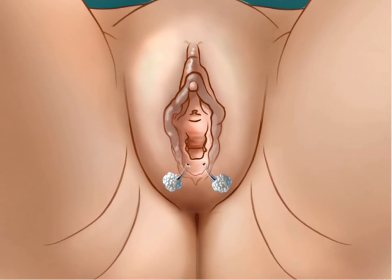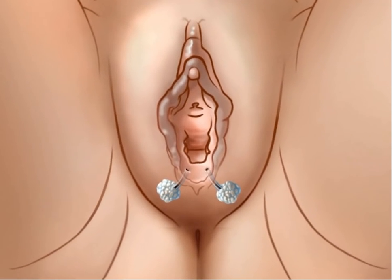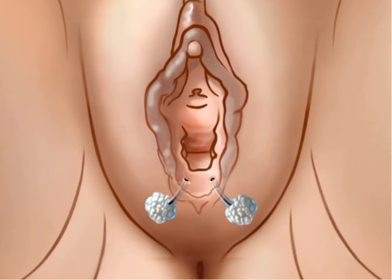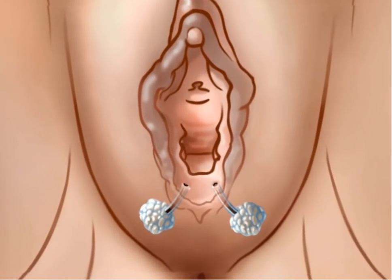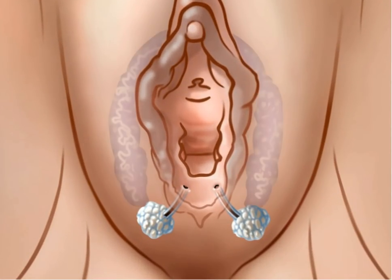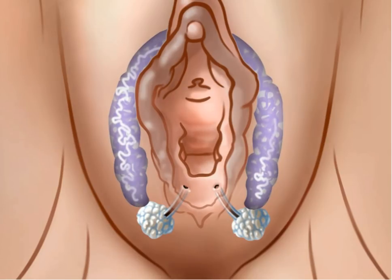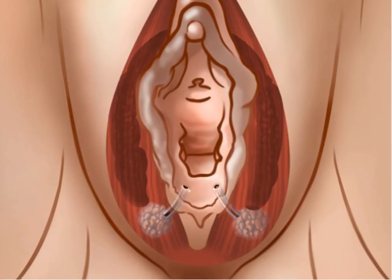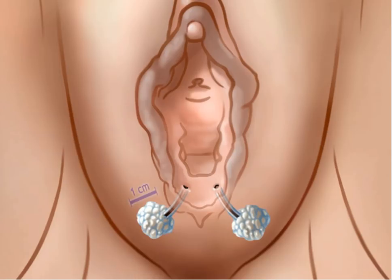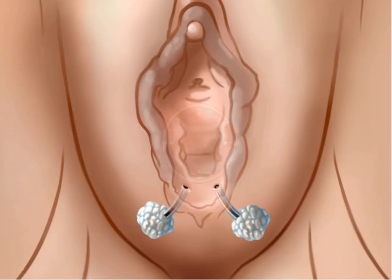The Bartholin glands, also known as the major vestibular glands, are found on both sides of the vaginal opening. They lie inferior to the vestibular bulb and deep to the bulbocavernous muscle. These glands are approximately one centimeter in diameter. Their ducts are 1.5 to 2 centimeters long and open just distal to the hymenal ring at 5 and 7 o'clock.